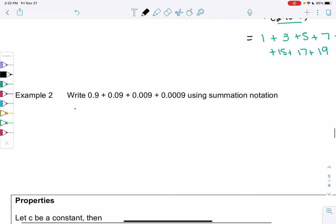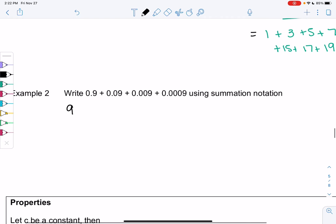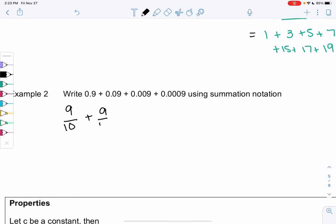So we have 9 out of 10 would be 9 tenths. 0.09 would be 9 one hundredths. So that's 9 out of 100. 9 out of 1,000. And then plus 9 out of 10,000. We're just adding a 0 every time. So we have 9 tenths, 9 hundredths, 9 thousandths, and then 9 ten thousandths.